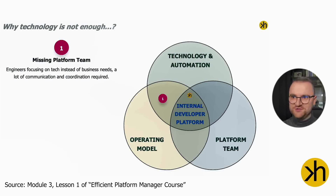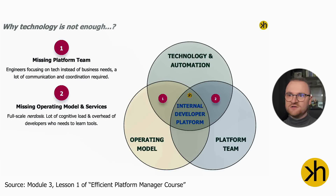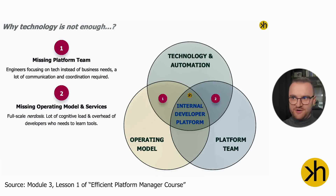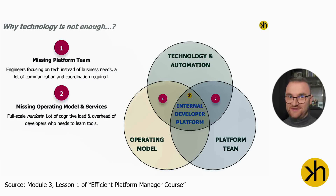An even worse situation is when you have a platform team and automation but are missing an operating model. In such a setup, no one knows where their responsibility lies. The technology portfolio becomes much bigger than it should be because we haven't decided who is doing what. There is also a lot of overhead and technology upskilling required from the stream-aligned teams, leaving them no time for business feature delivery. This is in my opinion one of the worst and yet most popular scenarios.